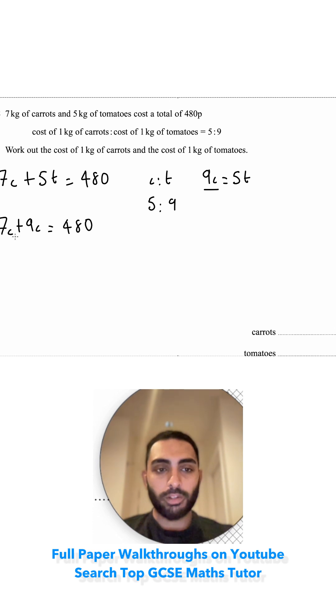Because I've got the same letter I can solve it. 7 lots of c plus 9 lots of c is 16c is equal to 480. You're being multiplied by 16, so I need to divide by 16 on both sides. So c is equal to, if you do your 16 times table...